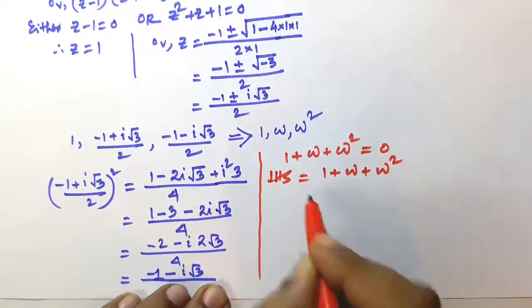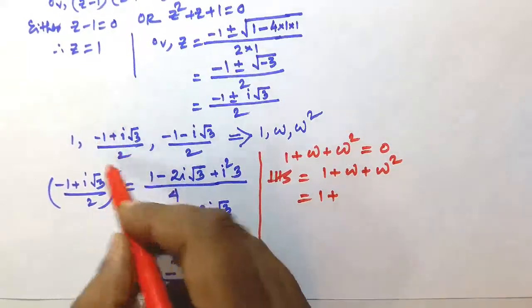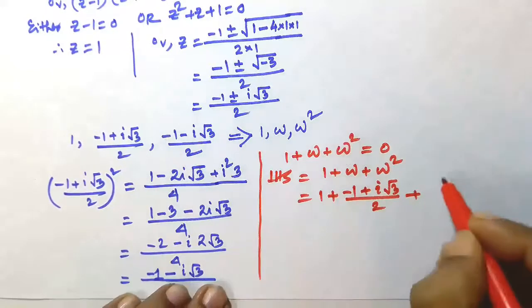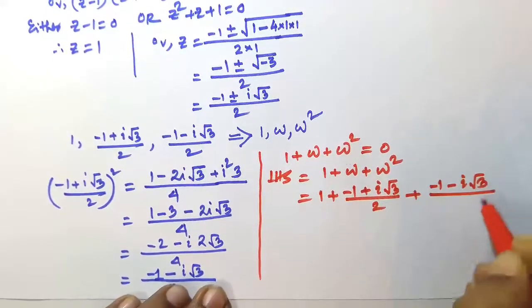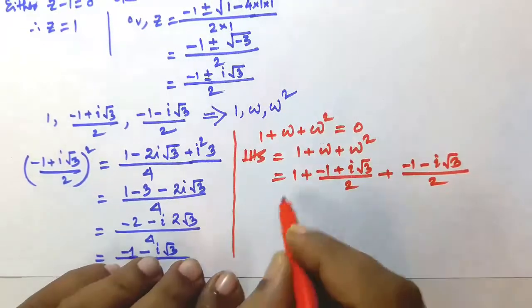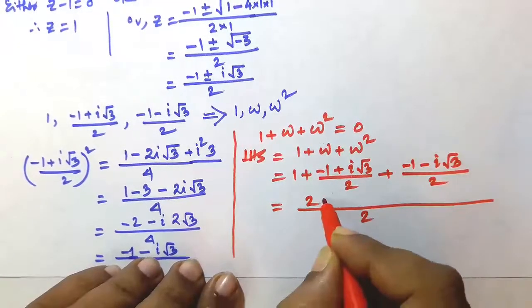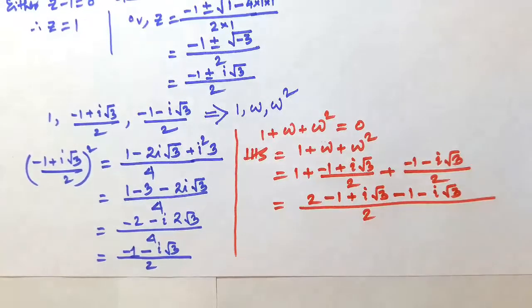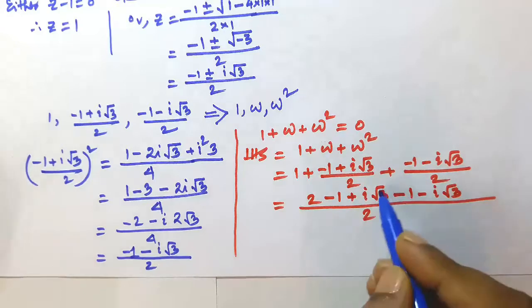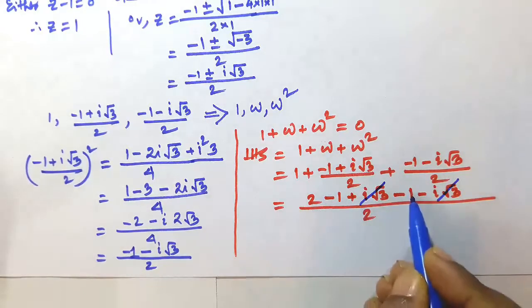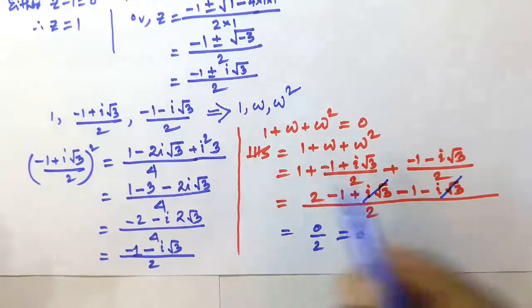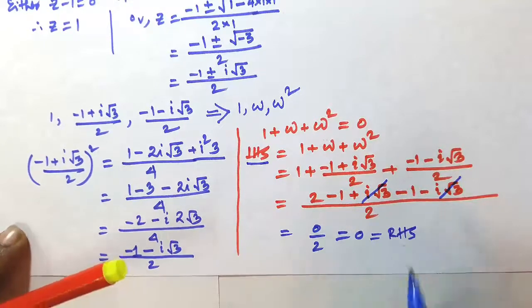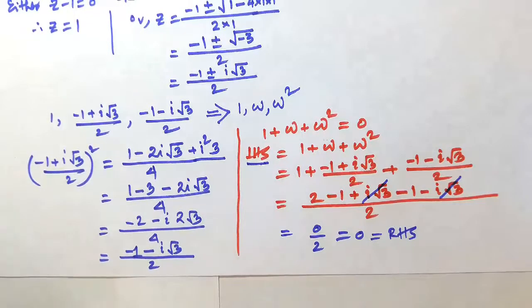To verify: 1 plus omega plus omega squared equals 1 plus minus 1 plus i root 3 over 2 plus minus 1 minus i root 3 over 2. Taking a common denominator of 2: 2 minus 1 plus i root 3 minus 1 minus i root 3 over 2. The i root 3 terms cancel, giving 2 minus 2 over 2, which equals 0. So 1 plus omega plus omega squared is equal to 0.